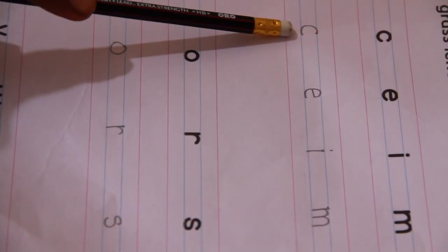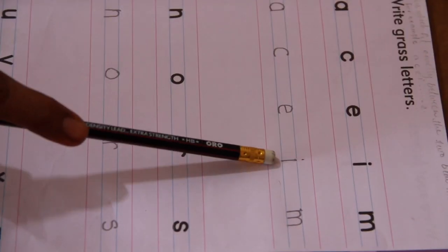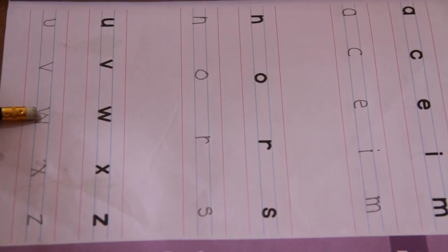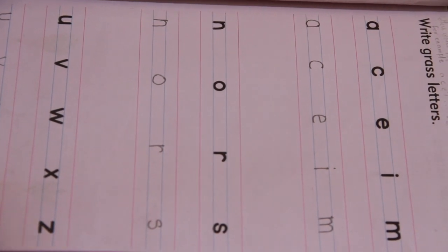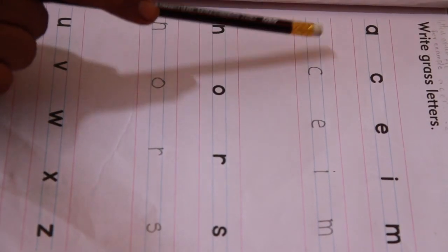You can see the book and you can see the work. Please write your work on the blue line. Let us read again. A, C, E, I, M, N, O, R, S, U, V, W, X, Z. These letters are called grass letters. And grass letters are always written in the blue line, in the middle blue line.